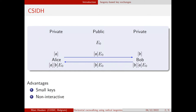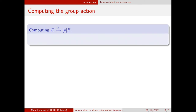What's really cool about CSIDH is that it has very small keys. Compared to all the other post-quantum key exchange protocols, it has the smallest keys, but it's relatively slow. And the reason it's slow is because computing the group action is slow.